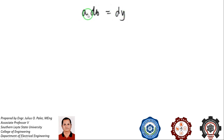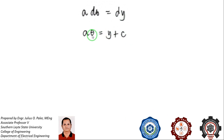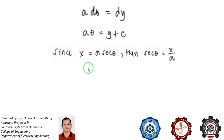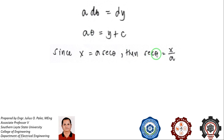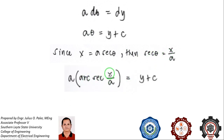We can now integrate both sides of the equation. The integral of a d theta is a theta, equal to y plus c. Next, we determine what theta is. Based on our assumption that x equals a secant theta, it follows that secant theta equals x over a, so theta equals arc secant of x over a.